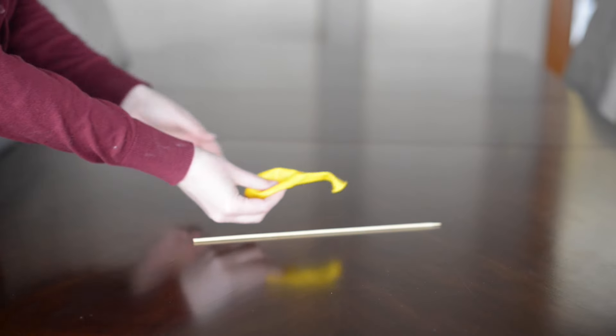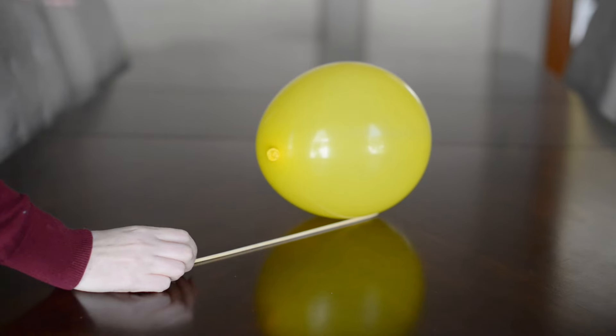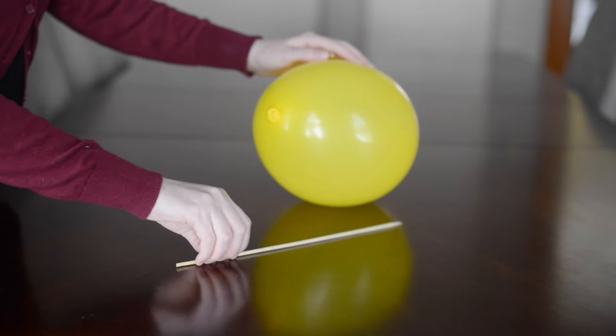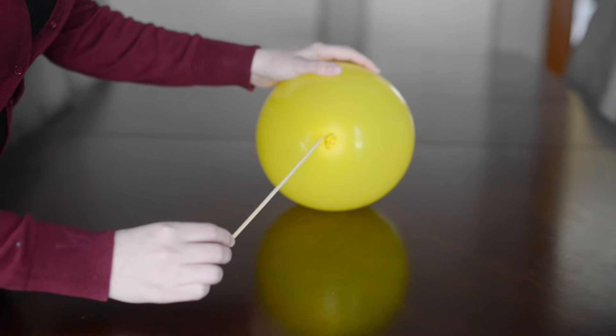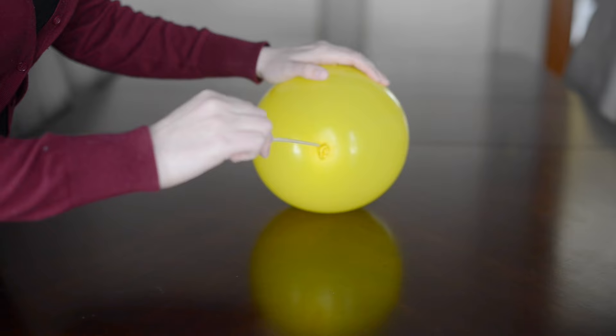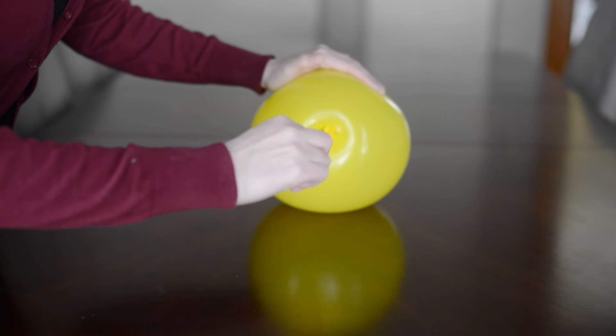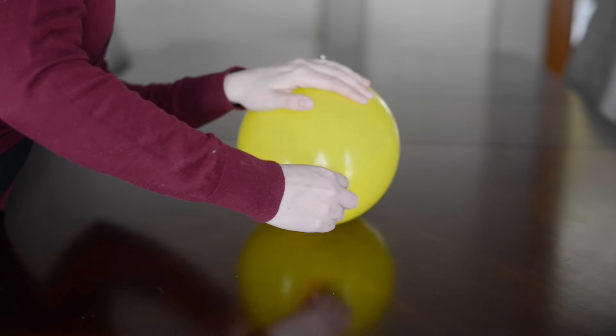What you'll need for this is a wooden skewer and a balloon. After blowing up your balloon, you want to poke your skewer through the bottom where you tied your balloon and then up through the top of the balloon.